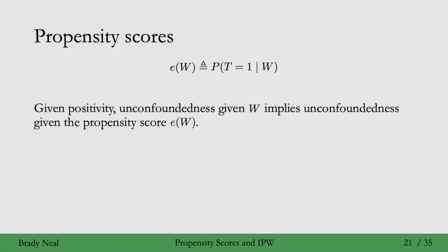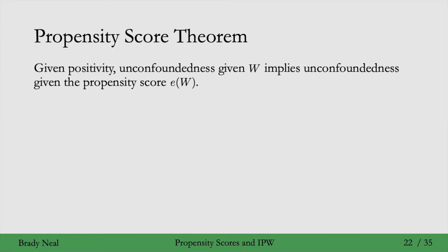This is kind of amazing because even if W is super high-dimensional, the propensity score is only one-dimensional. It's only a scalar, just the probability that treatment equals 1 given W. This really cool result is known as the propensity score theorem.